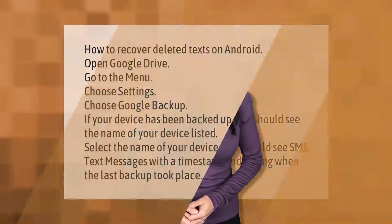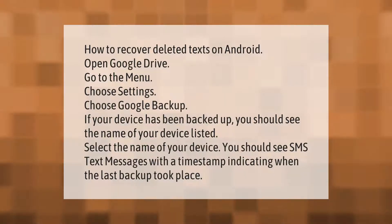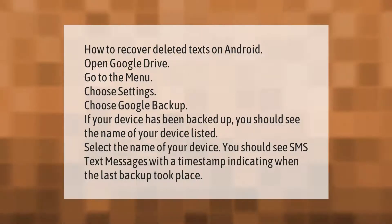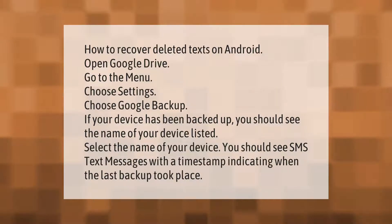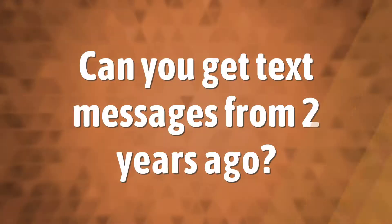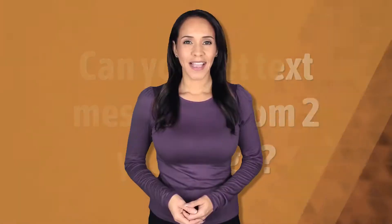How to recover deleted texts on Android: Open Google Drive, go to the Menu, choose Settings, then choose Google Backup. If your device has been backed up, you should see the name of your device listed. Select the name of your device — you should see SMS text messages with a timestamp indicating when the last backup took place.